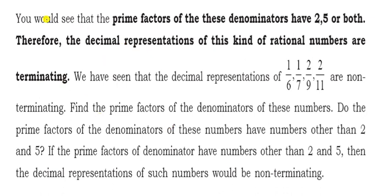Let us now see the rule for this chapter. If the prime factors of the denominator have only 2 or 5, the decimal will be terminating. If the denominator has any prime factor other than 2 and 5, the decimal will be non-terminating.